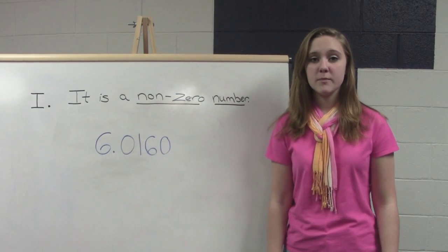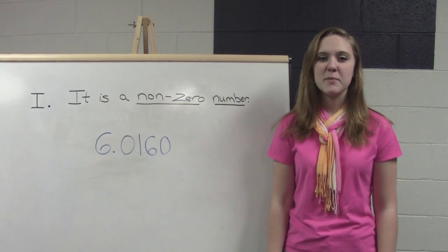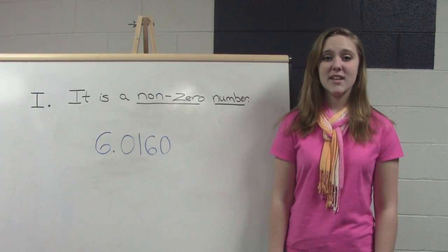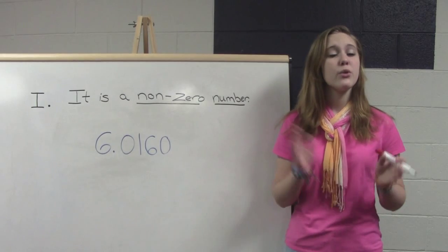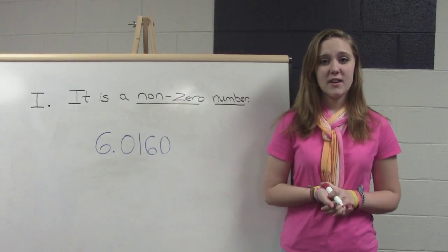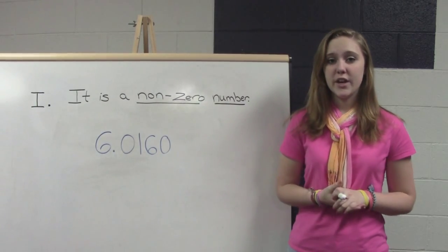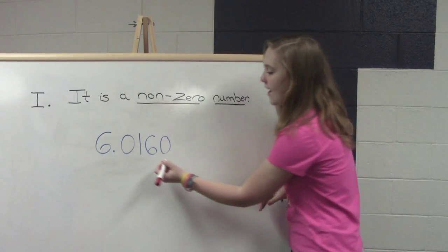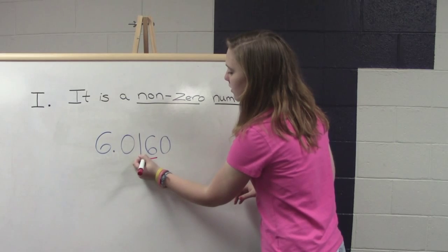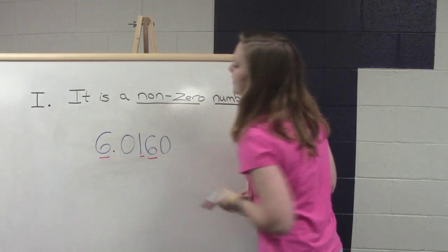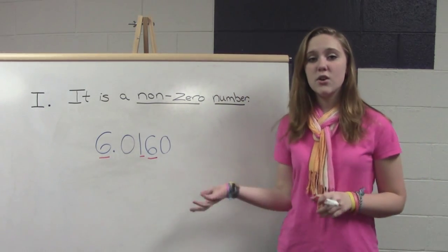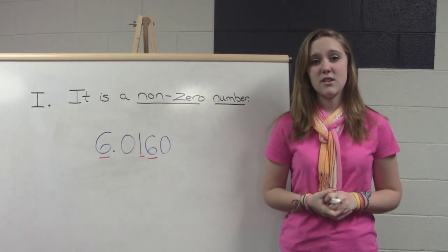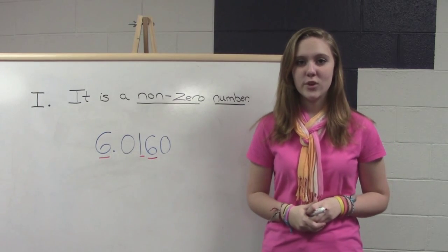Rule number one: the number you're looking at has to be a non-zero number. As long as it's any number between 1 through 9, it's significant. So, if you look at our example here, we have a few non-zero numbers: we have 6, 1, and 6. Since those are our non-zero numbers, we know that this number has at least three significant figures.